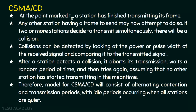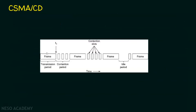Looking at the diagram: this is a transmission period where some station is transmitting a frame. After the transmission period, there is a contention period — the minimum time where any host checks whether a collision can happen. That contention period is followed by the next transmission period. And where all stations are quiet, that is the idle period.